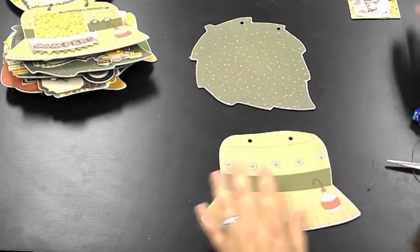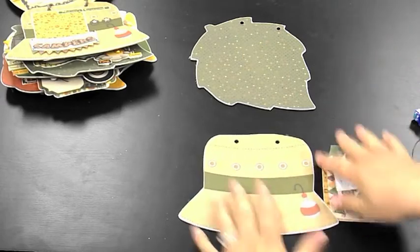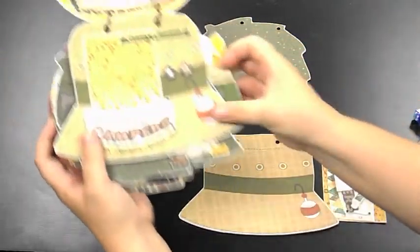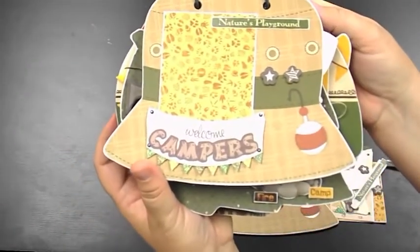On to page seven. The cute little camping hat. Here's what this guy looks like. You can see that.